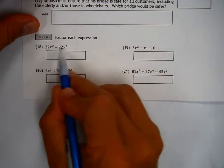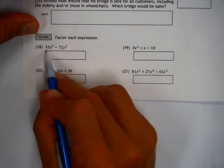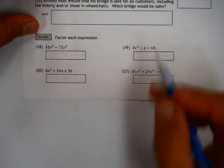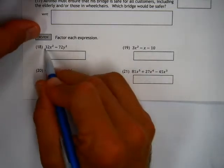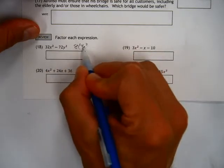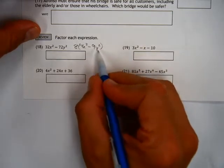These, however, are not, but they do have some stuff in common. So we want to see if we can take something out. Turns out 8 goes into 32 and 72, and it's probably the biggest number that goes into both. If I take out an 8, then I'm left with 4x squared, which happens to be a perfect square, minus 9y squared, which also happens to be a perfect square.